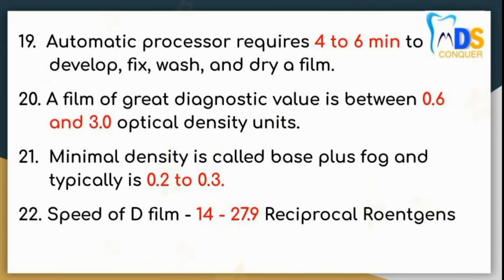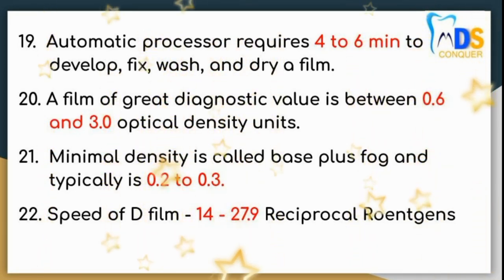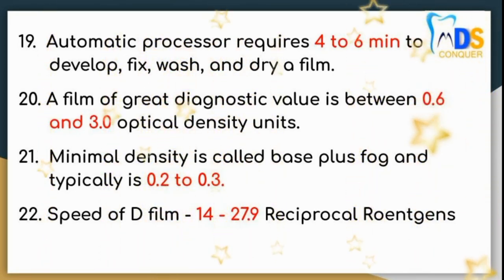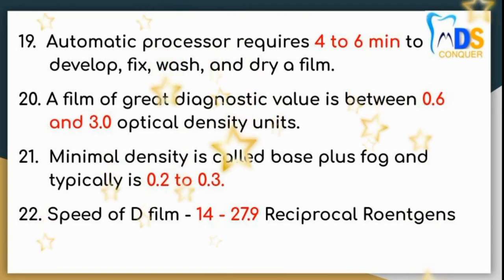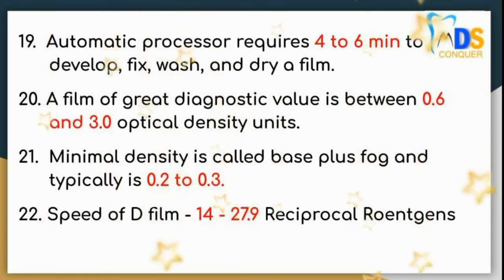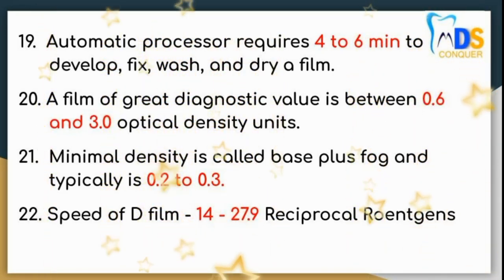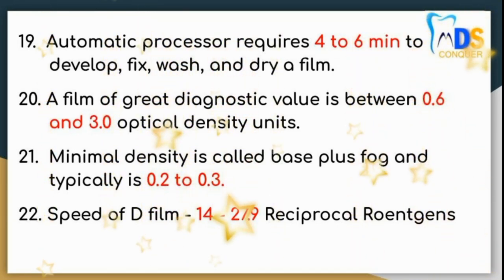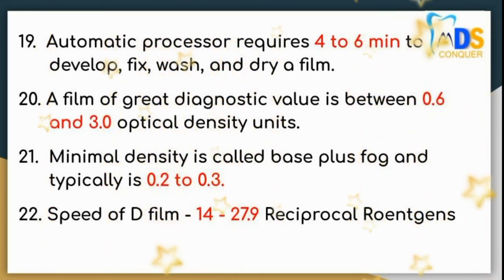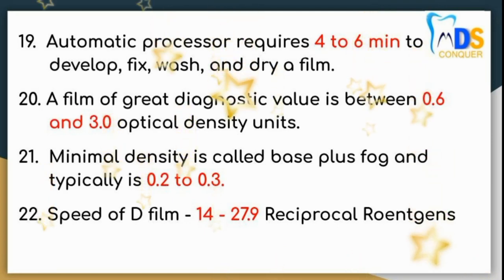Point number 19: Automatic processor requires 4 to 6 minutes to develop, fix, wash, and dry a film. Number 20: A film of great diagnostic value is between 0.6 to 3 optical density units. Number 21: Minimal density is called base plus fog and is typically 0.2 to 0.3.